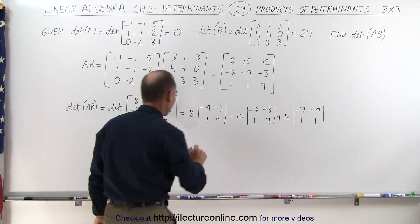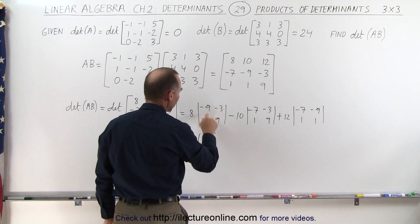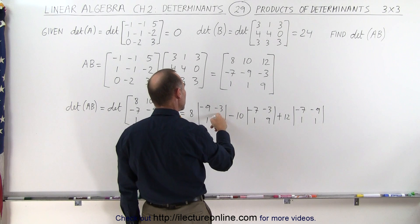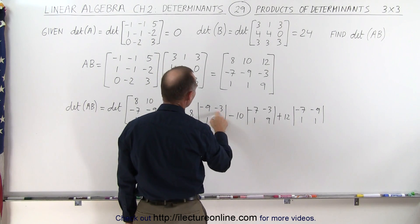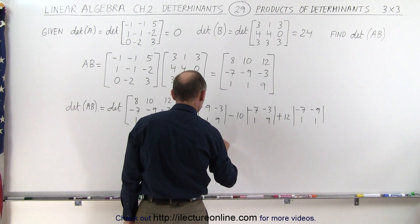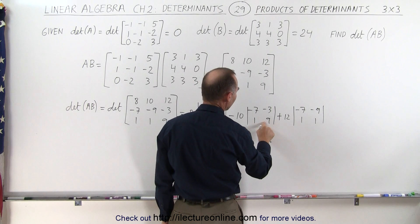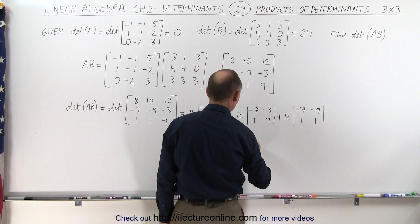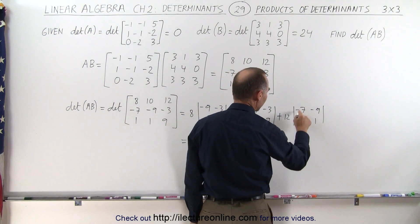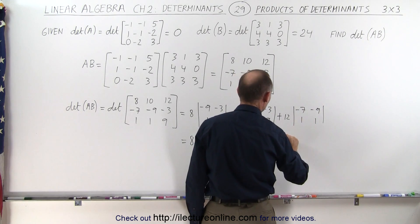Let's go ahead and work that out. This is equal to 8 times (minus 81 minus a minus 3, that's plus 3), so minus 81 plus 3 gives us minus 78. Here we get minus 10 times (minus 63 plus 3 is minus 60). And here we get plus 12 times (minus 7 minus a minus 9, which is plus 9, that would be plus 2).